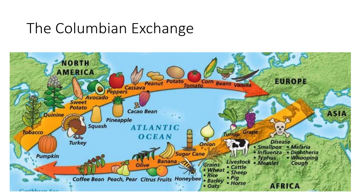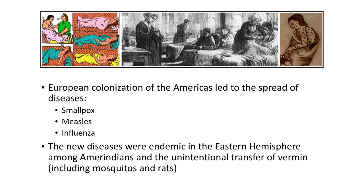The Columbian Exchange moved all sorts of goods, people, and diseases back and forth. European colonization of the Americas led to the spread of diseases like smallpox, measles, and influenza. These diseases were endemic in the Eastern Hemisphere and spread incredibly quickly among the Amerindians. This unintentional transfer also included vermin like mosquitoes and rats. So we can thank the Europeans not only for us being here, but also for mosquitoes.